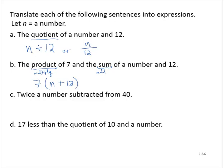Twice a number subtracted from 40. Twice a number means to multiply by 2. So we're going to multiply a number by 2, and that's being subtracted from 40.